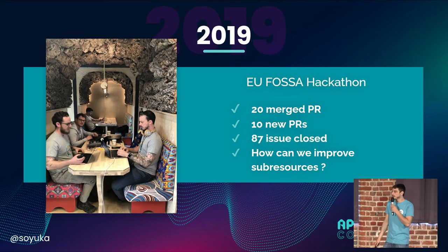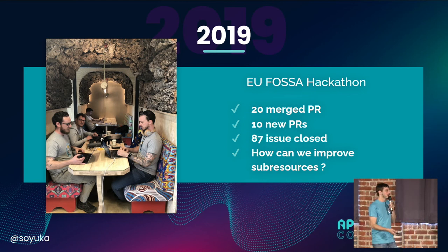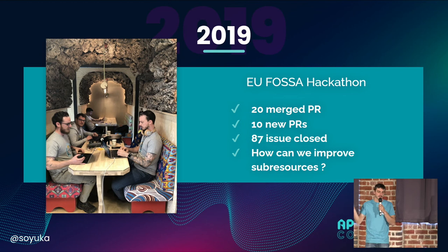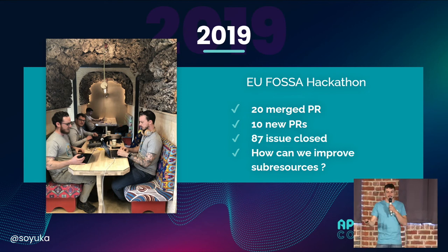In 2019, we went to this European hackathon in Brussels, where we joined efforts to work on Symfony and API Platform. We merged lots of pull requests, we closed almost 90 issues, so this was really a huge work for two days. And at that point, a question that kept coming back was: how can we improve sub-resources?